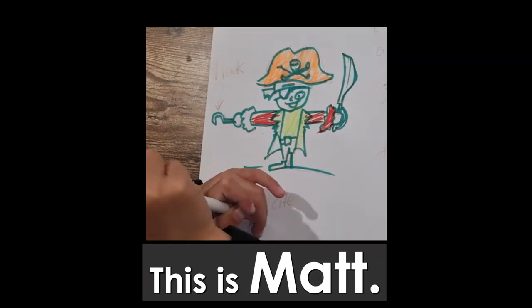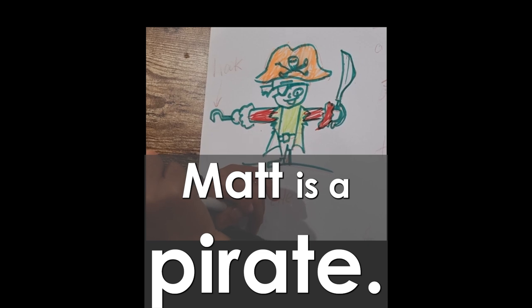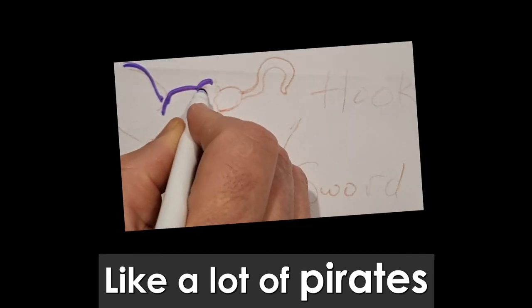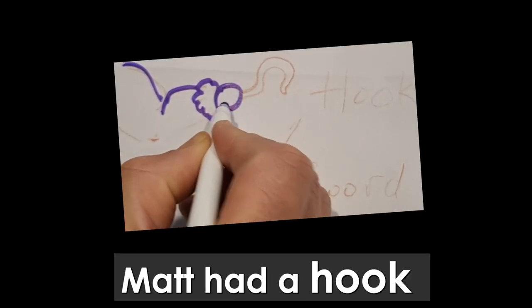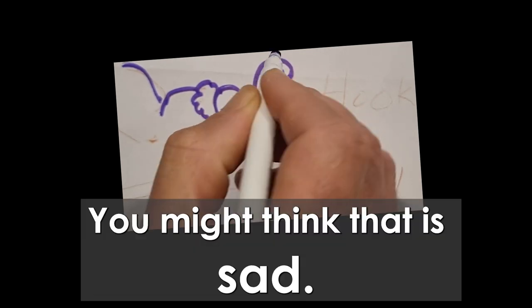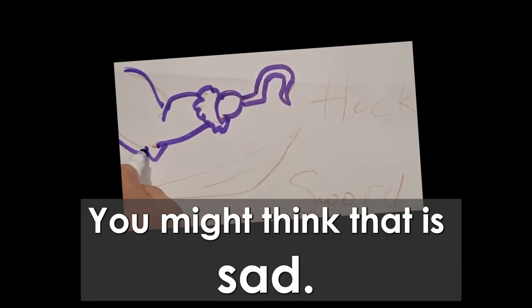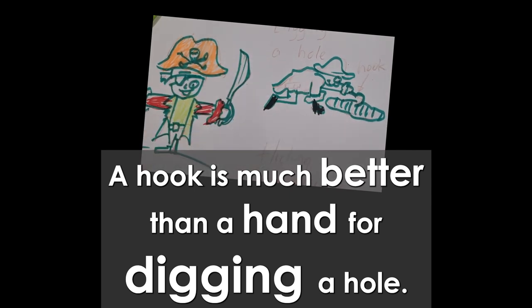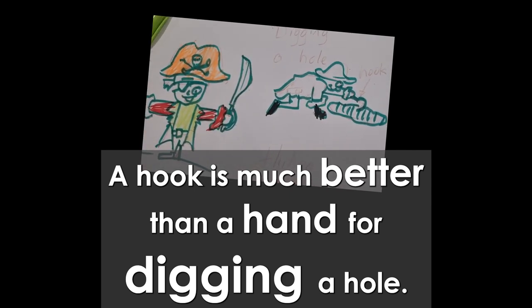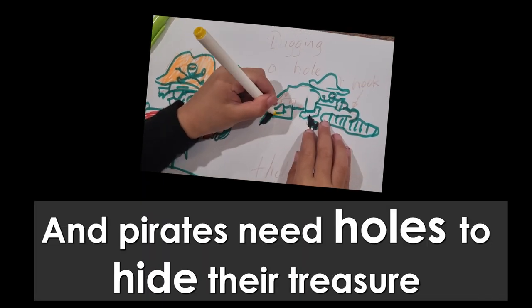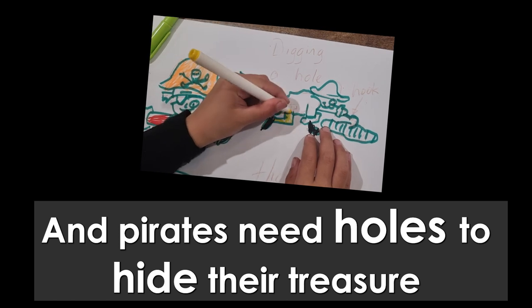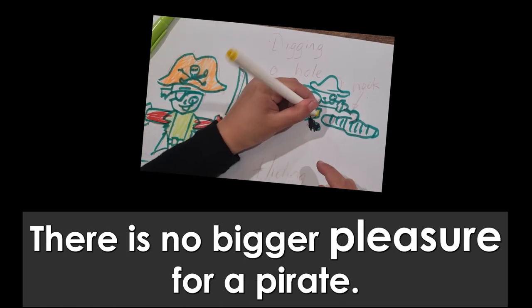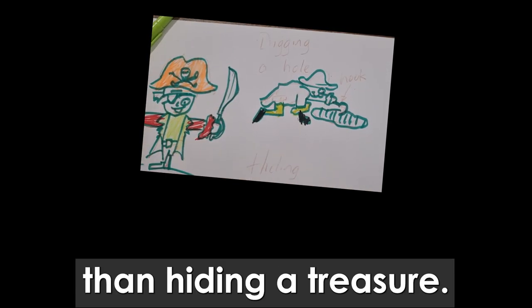This is Matt. Matt is a pirate. Like a lot of pirates, Matt had a hook instead of a hand. You might think that is sad. But a hook is good for something. A hook is much better than a hand for digging a hole. And pirates need holes to hide their treasures. There's no bigger pleasure for a pirate than hiding a treasure.